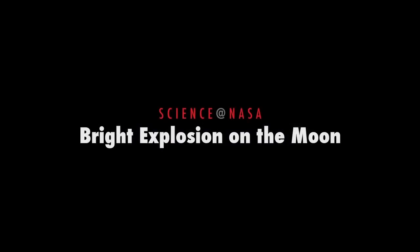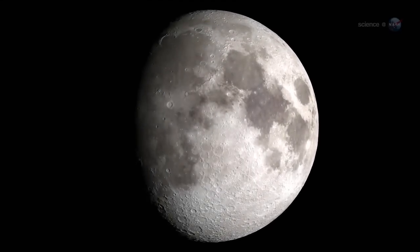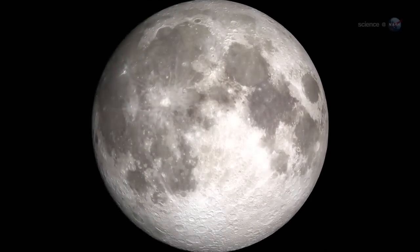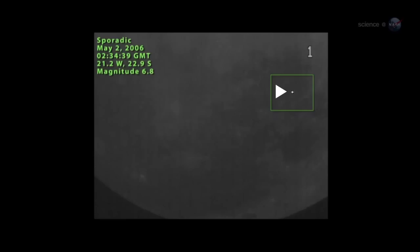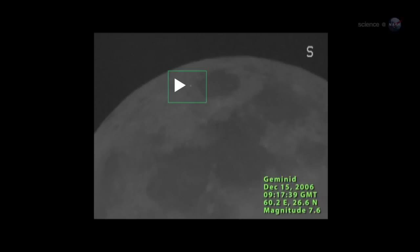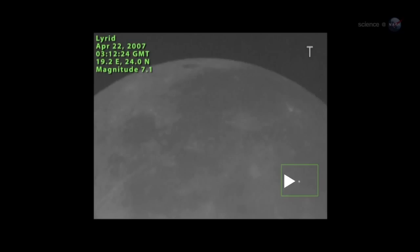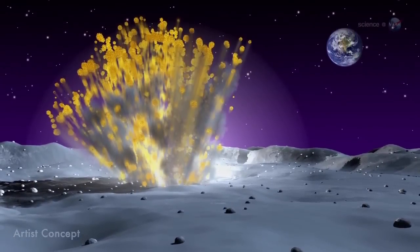Bright Explosion on the Moon, presented by Science at NASA. For the past eight years, NASA astronomers have been monitoring the Moon for signs of explosions caused by meteoroids hitting the lunar surface. Lunar meteor showers have turned out to be more common than anyone expected, with hundreds of detectable impacts occurring every year. They've just seen the biggest explosion in the history of the program.